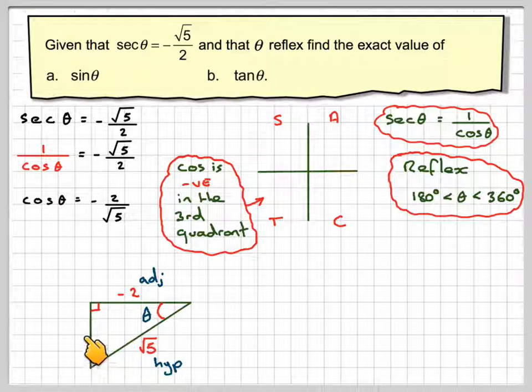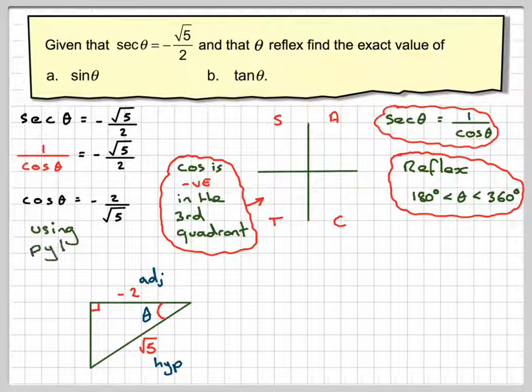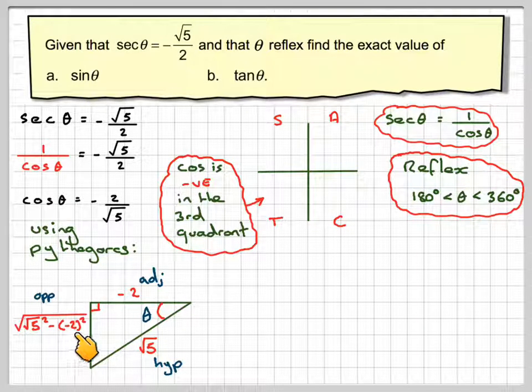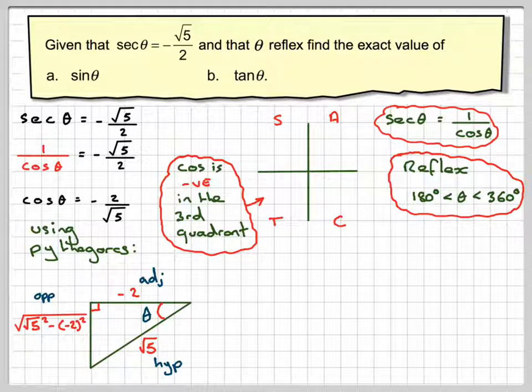Now, using Pythagoras, we can calculate the opposite side. So, using Pythagoras, the opposite side will be root 5 squared minus minus 2 squared. Minus because you've got the largest side here, and you're taking away the smaller side, which actually gives... And this will be negative,